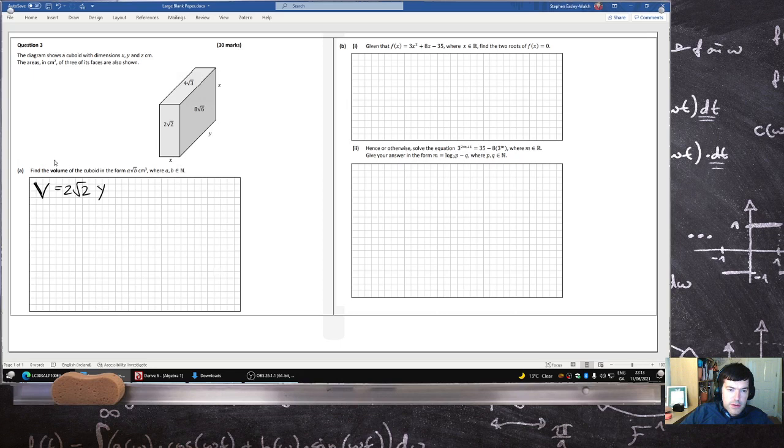Or likewise, you could say it's the area on the front, which is this side here, if you look at it from this side, that's 8√6 times how deep it goes. And likewise, you could do the same thing on the top, 4√3 times z.